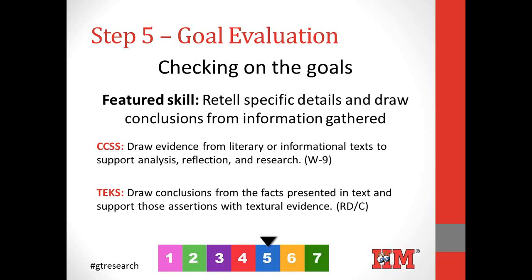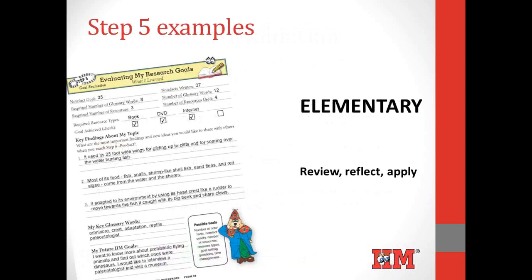The featured skill is important: we want to be sure students can retell specific details and draw conclusions from information gathered. Here's an example from our K-5 manual at the basic level, showing how these younger students look back, review, reflect, and apply. They review what goals they set in step two, reflect on what they achieved, and apply it as they write up their key findings and new understandings — also looking at key glossary words and setting future goals. The conclusions might be fairly simple, but this is where our students need to start.